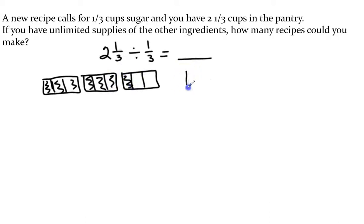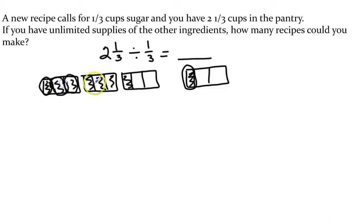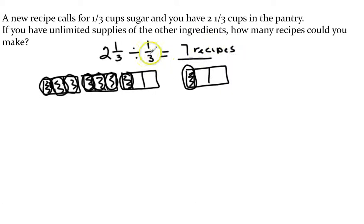One third looks like this. So I want to know how many of these can fit in here. I see one, two, three, four, five, six, and seven. So we could make seven recipes with our third cup measuring cup into two and one third cups of sugar.